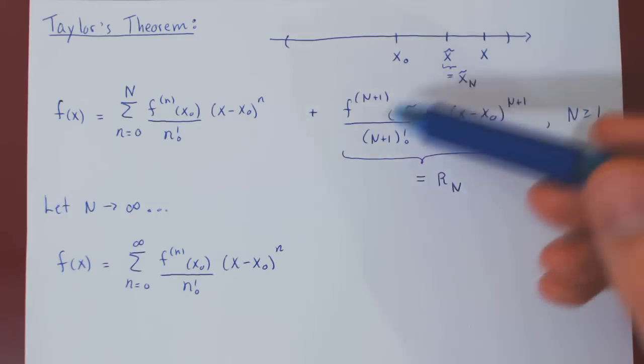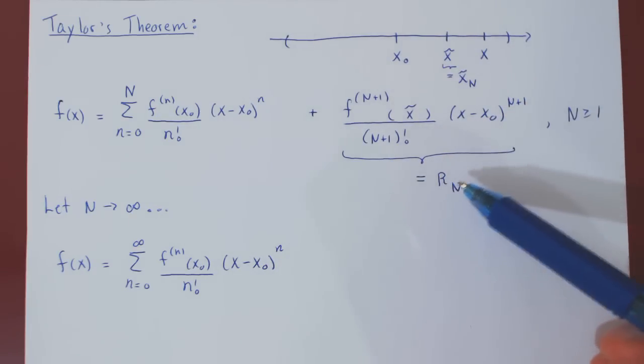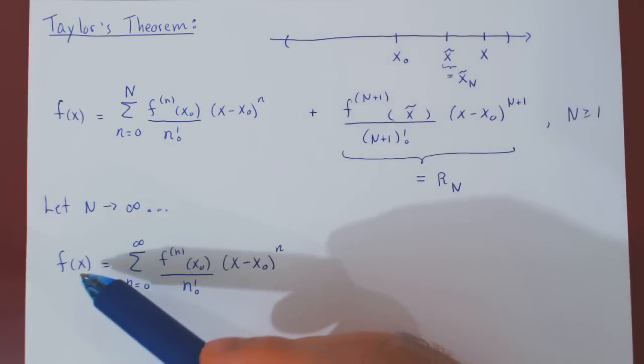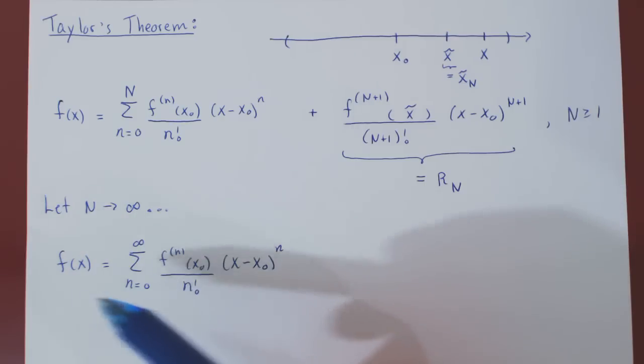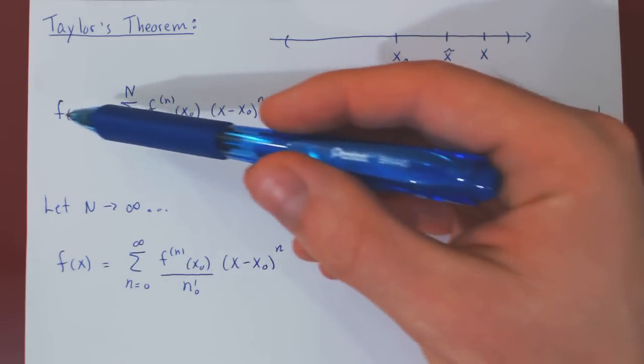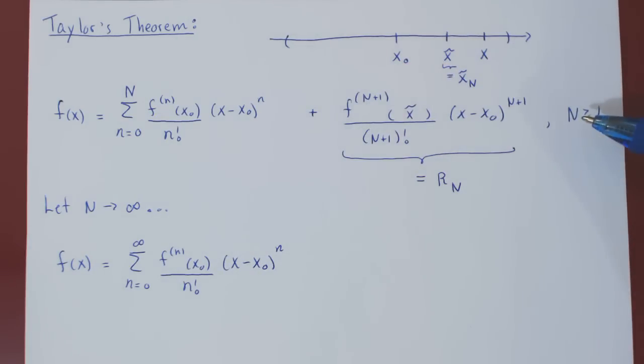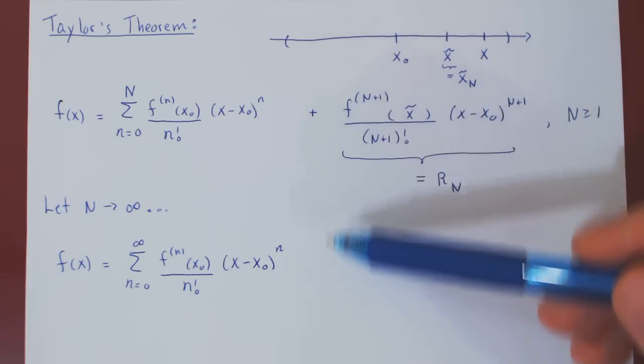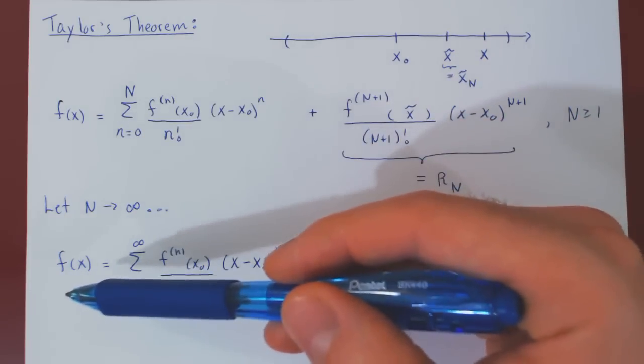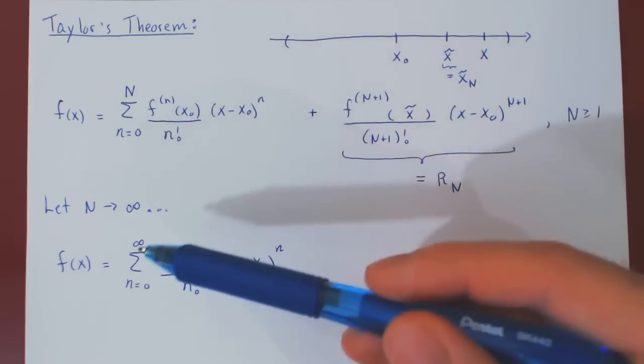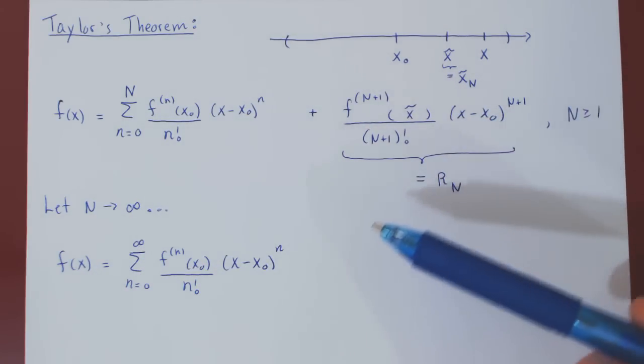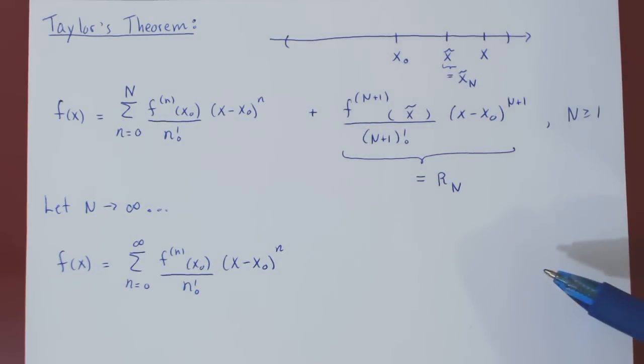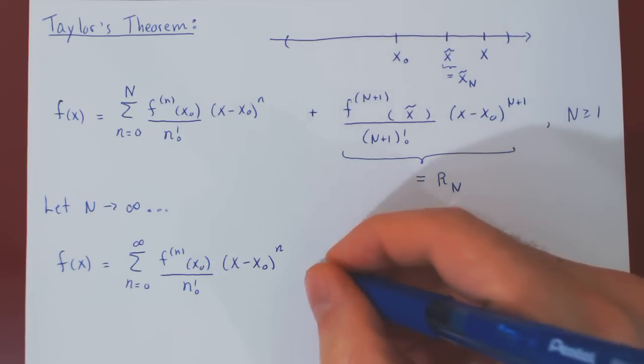What about the remainder term? Think about what needs to happen to the remainder term for the equality between the function and its Taylor series to be valid. We're saying both are equal for any choice of n. Letting n tend to infinity, f(x) stays f(x), the truncated Taylor series becomes the full Taylor series. And if the equality is to be valid, the remainder term in the limit has to disappear. Namely, it has to shrink to 0.